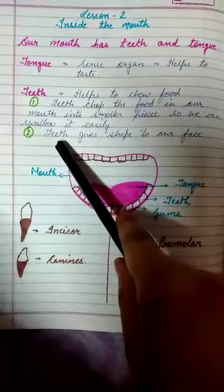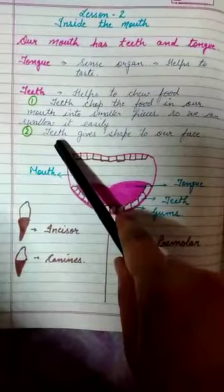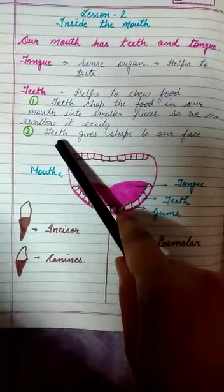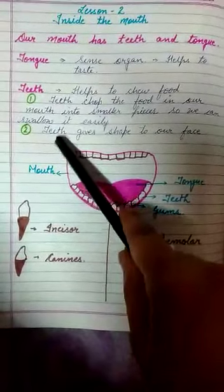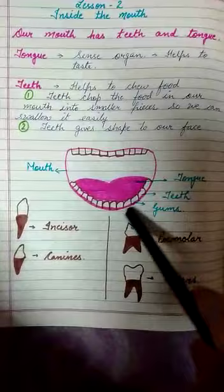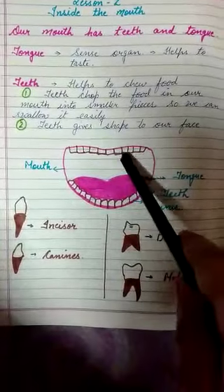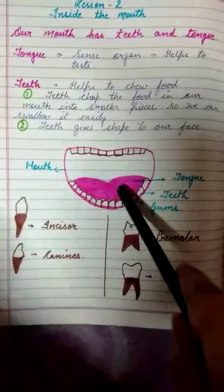Agar proper teeth hai, agar kisi ke bahut sundar dant hai, to uska face bahut hi sundar nazar aata hai. Yeh ek mouth mein draw kiya hai, ismein teeth aur tongue likha hai.